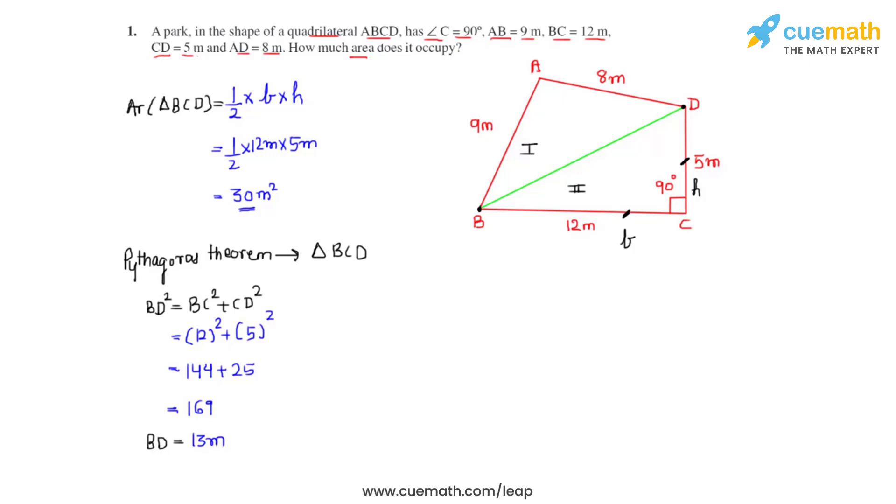Now that we have found out the length of BD, we can find the area of triangle ABD. But as we see that the height for this triangle is not given, we will have to make use of Heron's formula. So let's write that first.